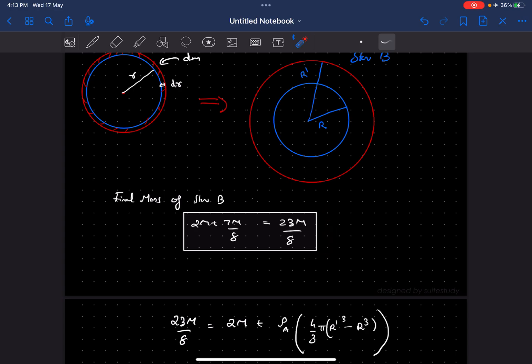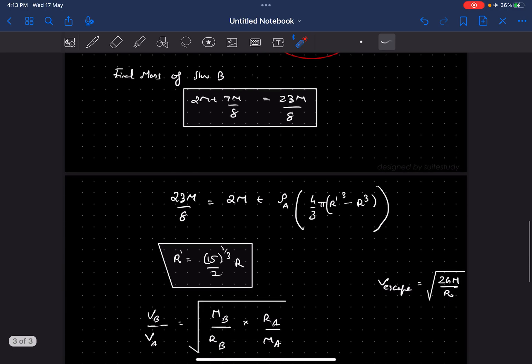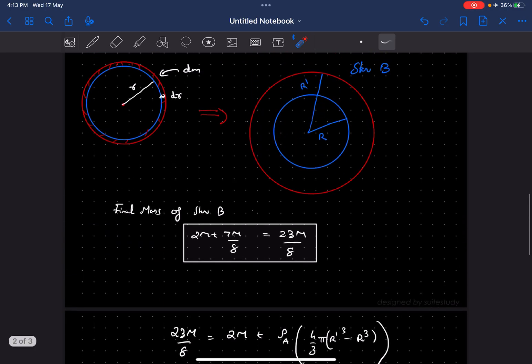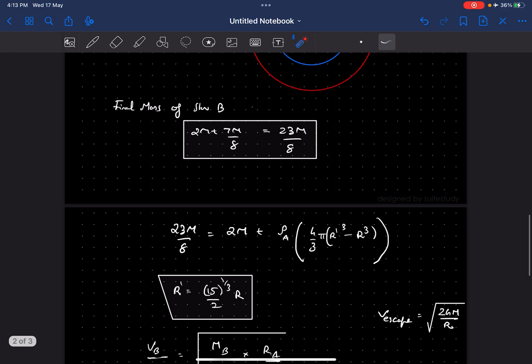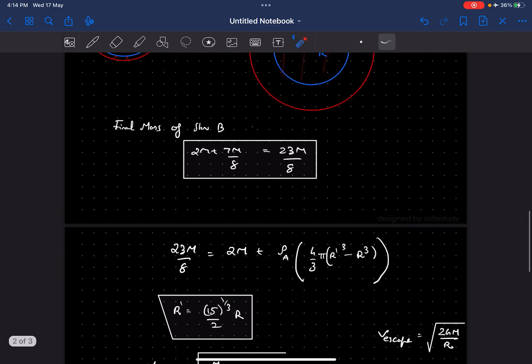Now this 23m by 8 I can write in another way, because we need the final radius of this planet. So 23m by 8 is the final mass, and that's comprised of the 2m mass, which is the initial mass of the blue part, and added to that is rho A times 4 by 3 pi r dash cube minus r cube.